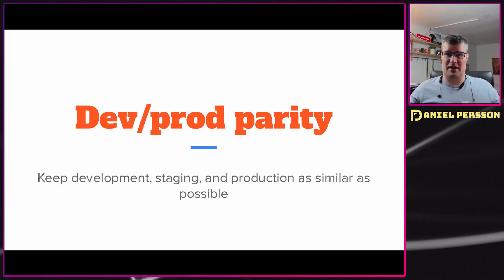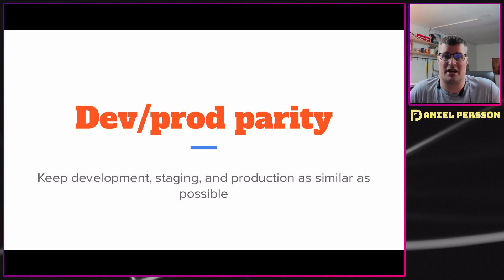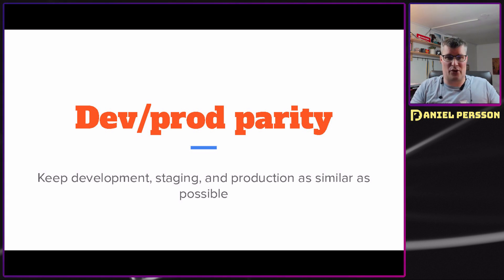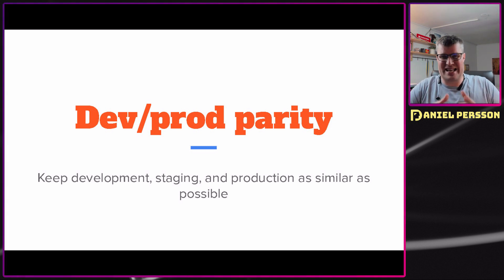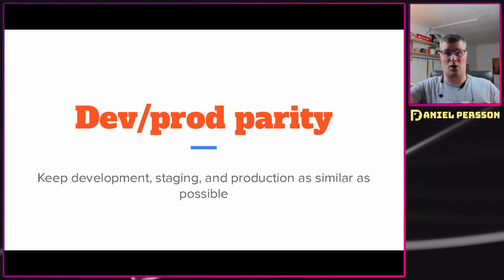Next up we need to have dev/prod parity — things that are similar in both production and your development environment. For instance, if we are running Kubernetes with Docker images, we develop in those Docker images so they have the same kind of environment as production. If we have parity between production, staging, and dev, it's easy to debug and figure out what is going wrong. If the environments are totally different, it's very hard to reproduce in dev what was wrong in production.